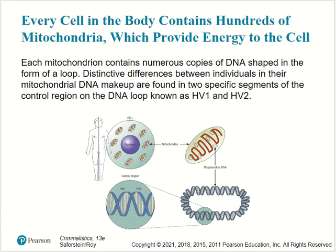Every cell in the body contains hundreds of mitochondria, which provide energy to the cell. Each mitochondrion contains numerous copies of DNA shaped in the form of a loop, like a plasmid. Distinctive differences between individuals in their mitochondrial DNA makeup are found in two specific segments of the control region of the DNA loop, known as HV1 and HV2. Notably, this mitochondrial DNA is also a double helix, but in a loop form.